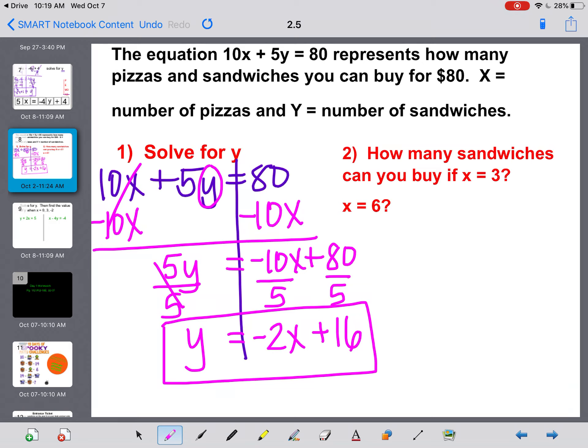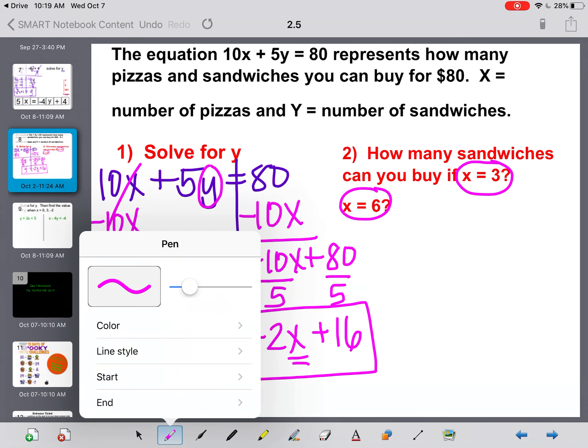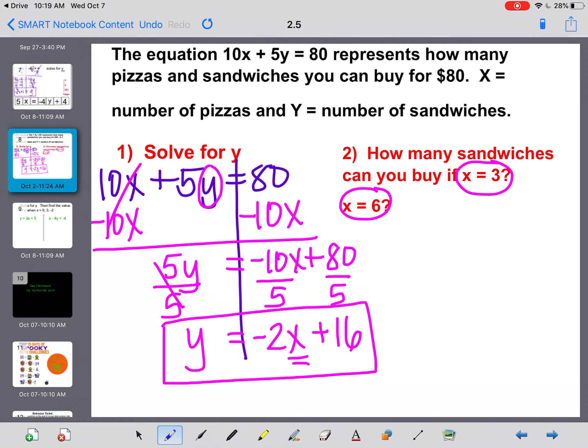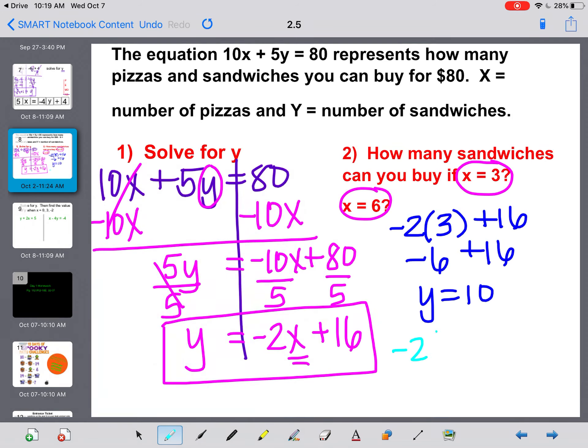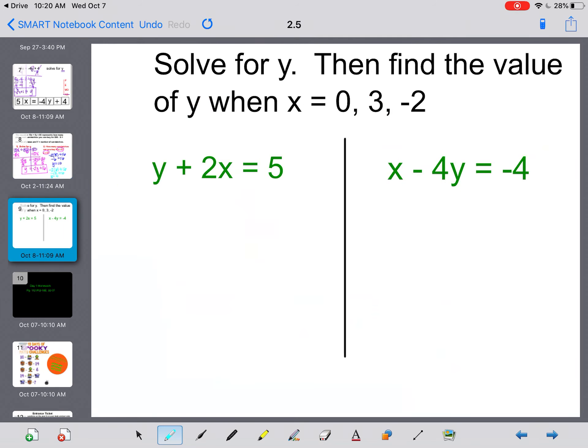Now it says how many sandwiches can you buy if x equals 3 or if x equals 6. So now I have it set up perfect that I can take these numbers and plug them in for this x. So let's find out, since x stands for pizzas, we'll find out what our number of sandwiches would be if I bought 3 pizzas. So we have negative 2 times 3 plus 16. Well, negative 2 times 3 is negative 6 plus 16 gives us y equals 10. That means if I buy 3 pizzas, I can buy 10 sandwiches for my $80 total. Then let's try, what if we bought 6 pizzas? Let's try that with a different color here. I'm going to plug in a 6 for my x. Negative 2 times 6 is negative 12 plus 16 is 4. So if I buy 6 pizzas, I will still have enough money to buy 4 sandwiches.